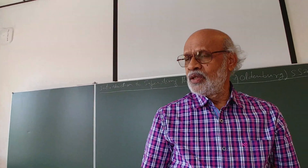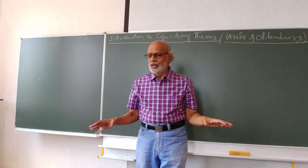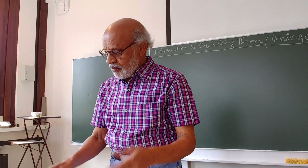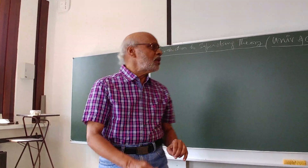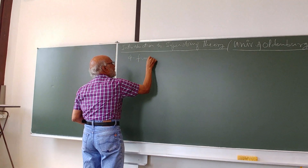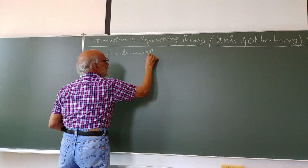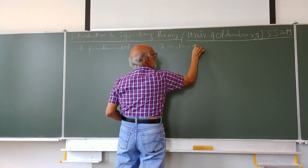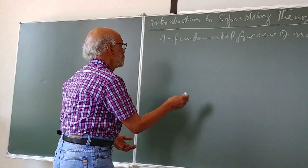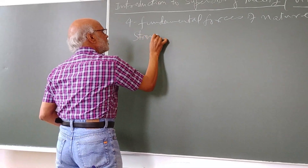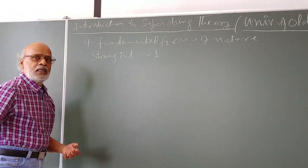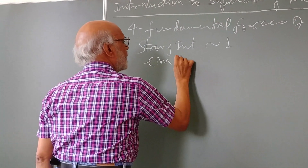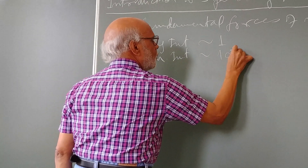There are too many concepts, so we can have a quick look at some of the key points — why we need them and what we are doing. The first most important thing is the four fundamental forces of nature. We can talk about their relative strengths. If I set the strength of the strong nuclear force equal to one, then the electromagnetic interaction would have strength of 10 to the power minus 3.